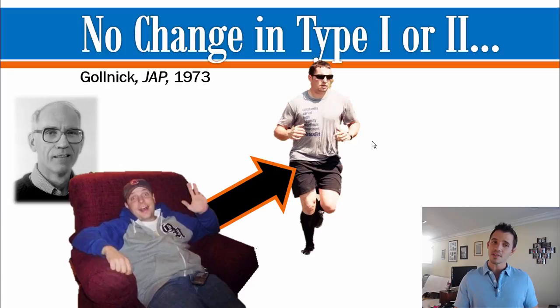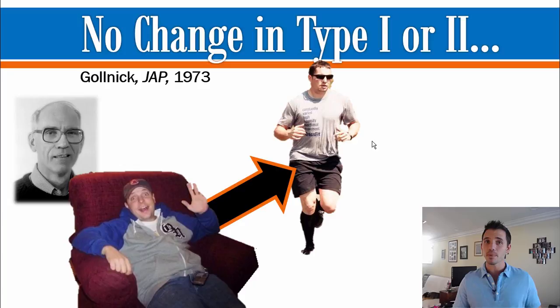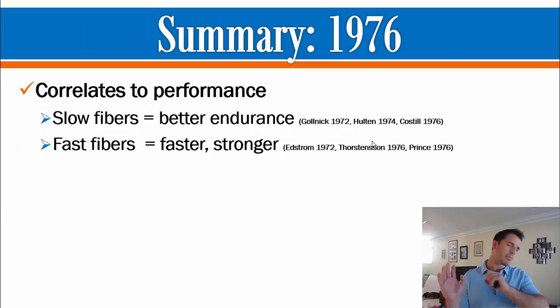Being the phenomenal scientist he was, Dr. Golnick followed it up with an actual training study. Instead of comparing sedentary people to endurance trained people, he took sedentary people, endurance trained them, and watched what happened over time. Unfortunately, he found no change at all in either the type 1s or the type 2s — again using histochemistry.